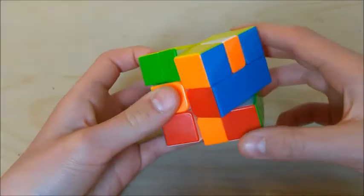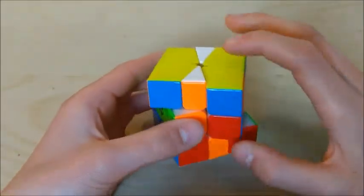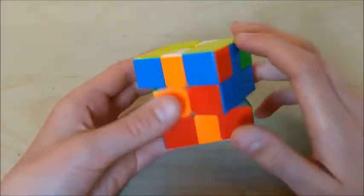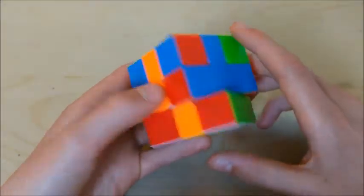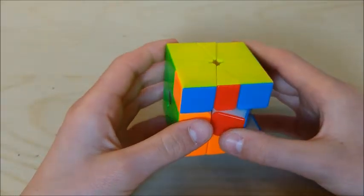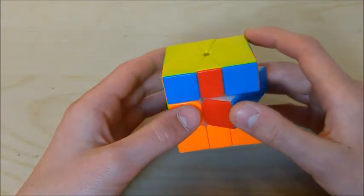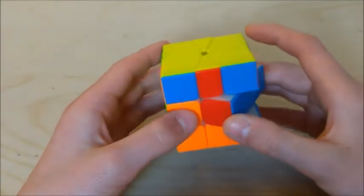And then slice back like that. And then we have just an M2, and when I have this case, I just put them in normally with an M2, and then do whatever PLL I get. So we do have parity in this case, and I would do parity from this angle because it would give me a J-perm with no flipping of the middle layer.